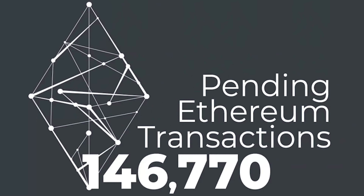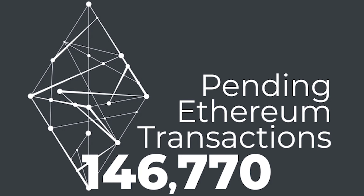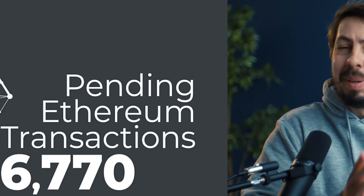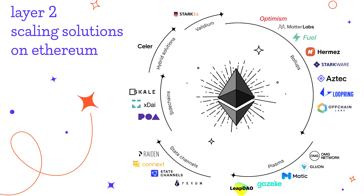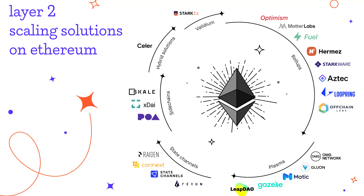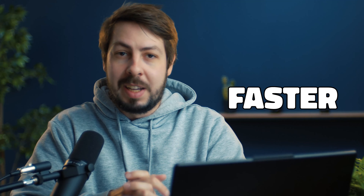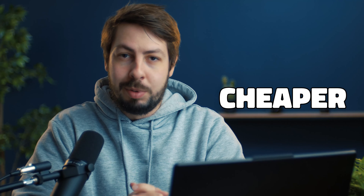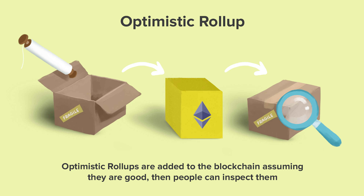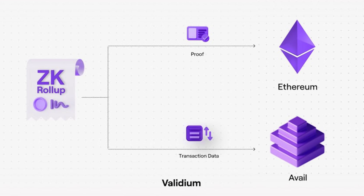Ethereum has always had a tough time handling lots of transactions at once. But then came the superheroes of Layer 2 scaling solutions. They made Ethereum faster and cheaper with cool tricks like optimistic rollups and ZK rollups.